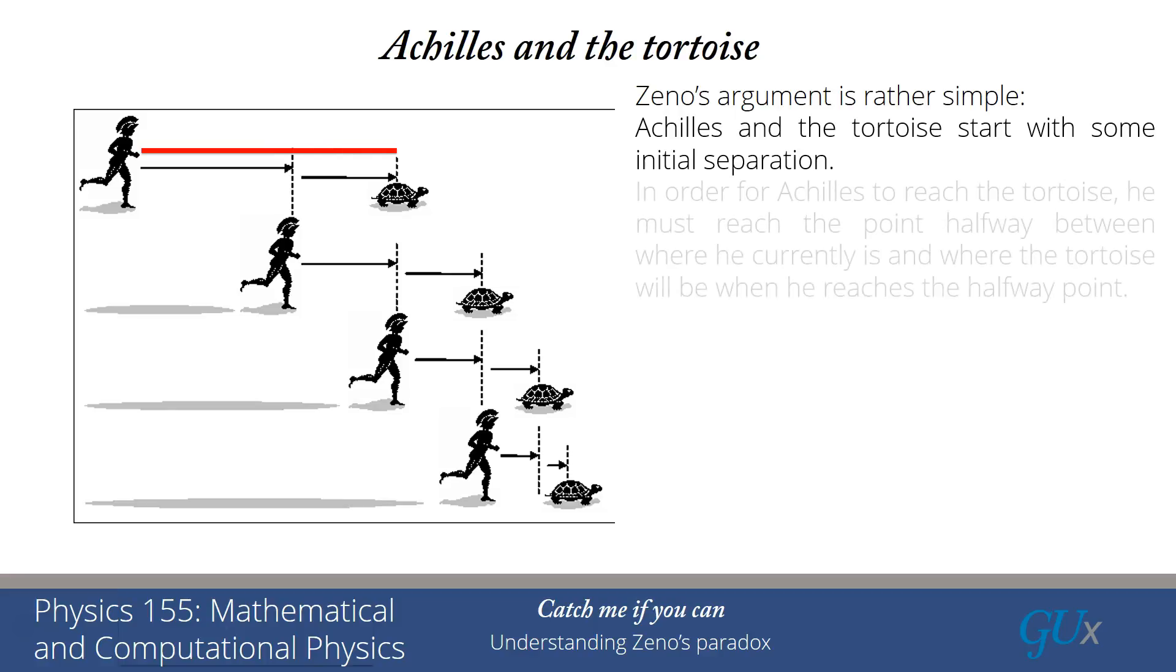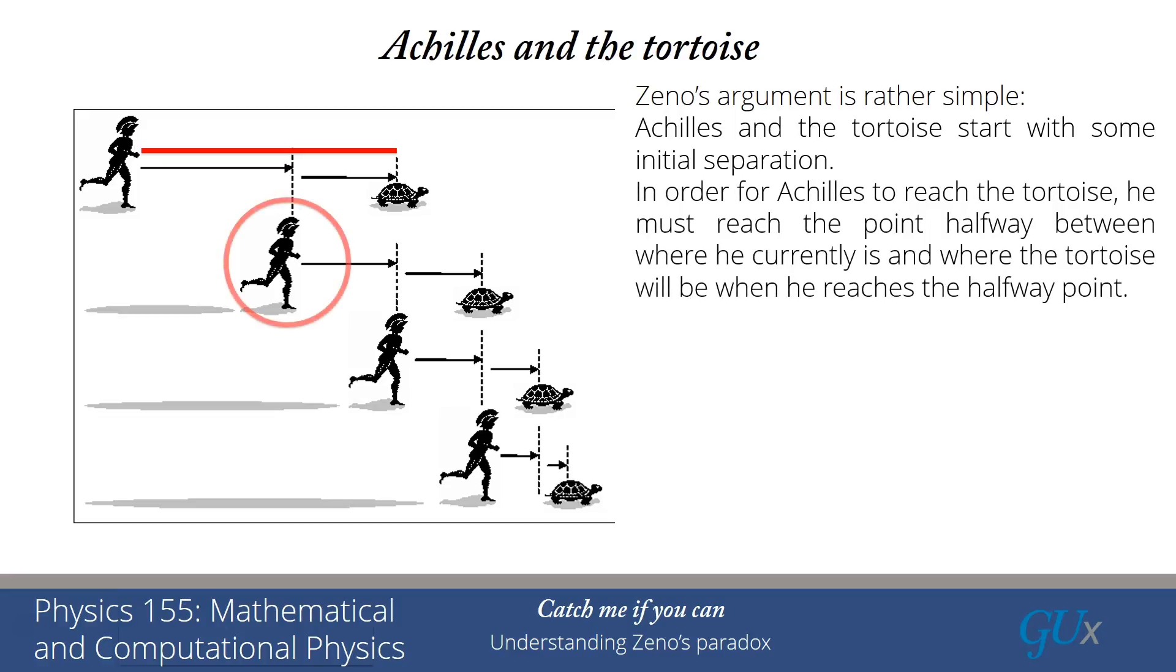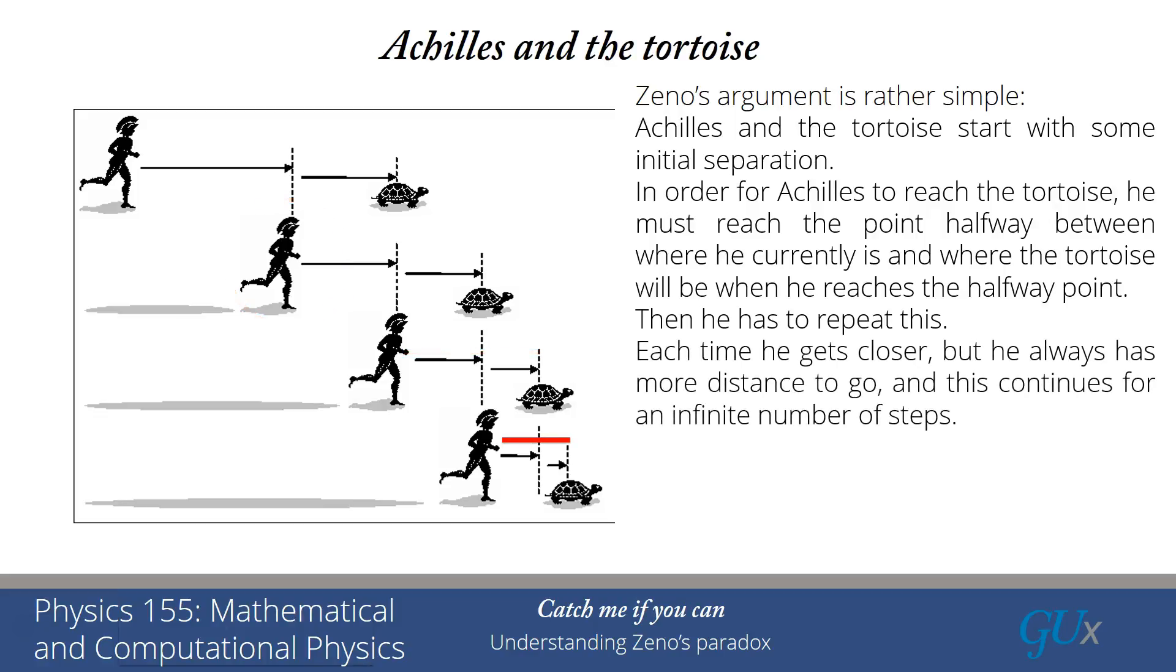And then if we wait for some period of time as Achilles is trying to reach the tortoise, he has to reach the point that is halfway between where he currently is and where the tortoise will be when he reaches that halfway point. Then he has to keep repeating this. And each time as he gets closer, that distance shrinks, but he always has more distance to go, and this series is going to continue for an infinite number of steps.